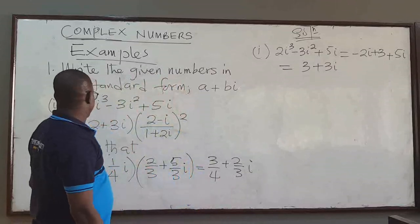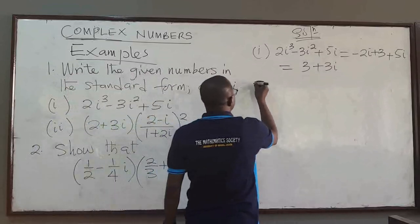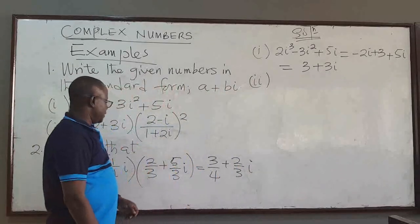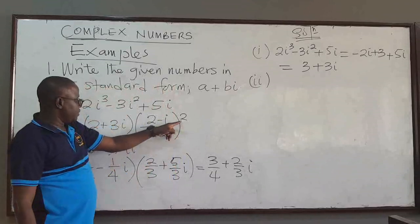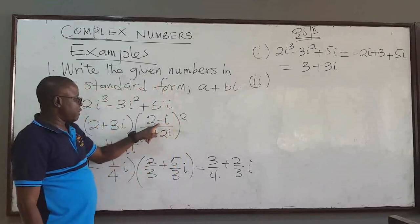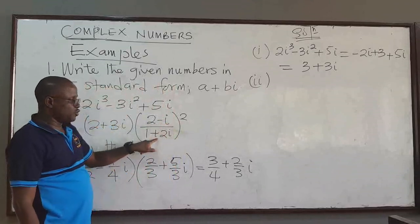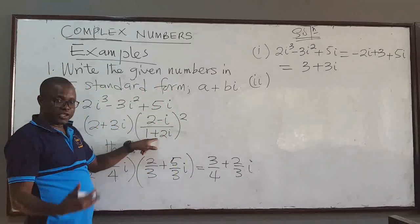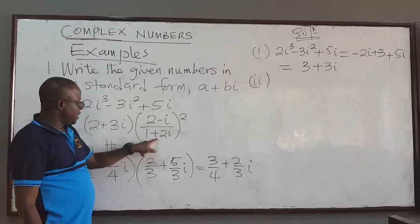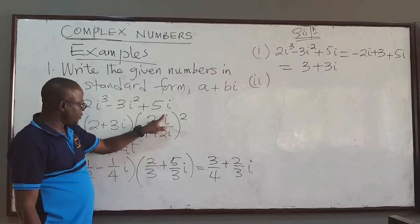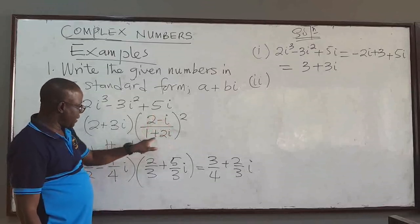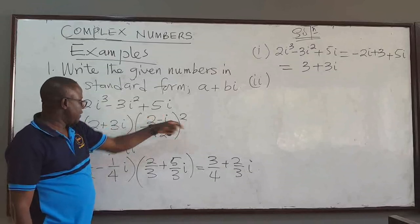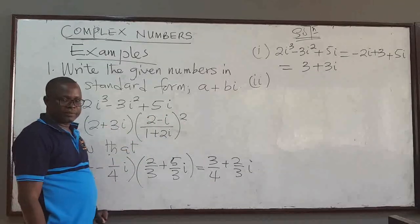What about this one? Now here, there are a couple of ways you could do it. You can try to expand this, square this, and square the numerator as well and multiply the resulting expression. But that is going to be very long — you can try it. I think the easiest way is to simplify this, put this in standard form first, then square it. After that, you multiply it all like this.